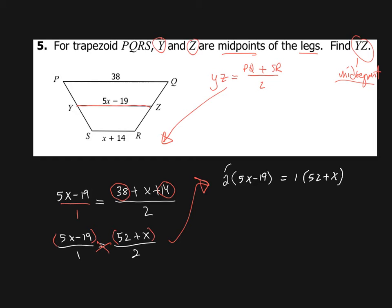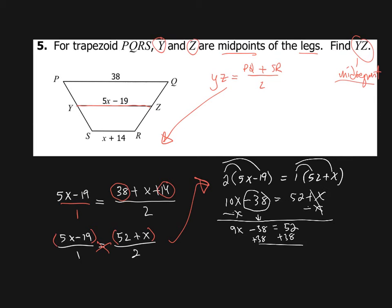is equal to 1 times 52 plus X. Now 2 times 5, we're going to distribute here and distribute here. That's going to be 10X minus 38 equals 52 plus X. Now we just use inverse operations. So minus X, minus X, 9X. This whole thing comes down. Minus 38 equals 52. Plus 38, plus 38. And we get 9X drops down. 38 cancels. And this is going to give us 90, divide by 9, and X equals 10.